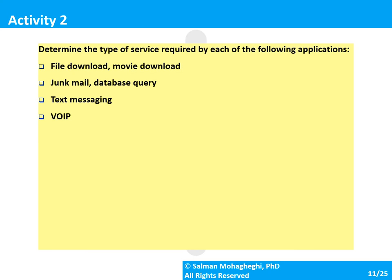In this activity, think about the listed types of applications and decide what type of connection and what level of reliability you would want for each. Please pause the video, think about this, and press play when you're ready to move on.